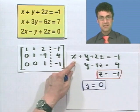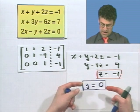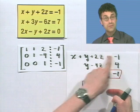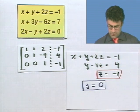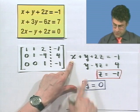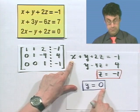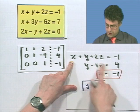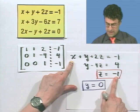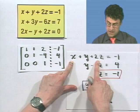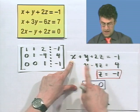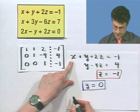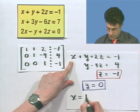And now how do I get x? Well, now that I know z and I know y, I can plug those two values into the first equation and finally solve for x. When I do that, what do I see? Well, I see x plus 0 plus 2 times negative 1, which is negative 2. So x plus negative 2, or x minus 2, equals negative 1. If I add 2 to both sides, I see x equals 1.